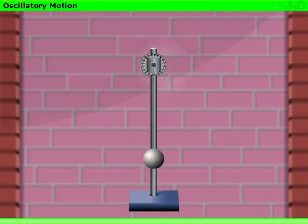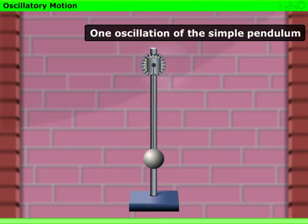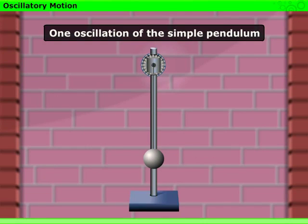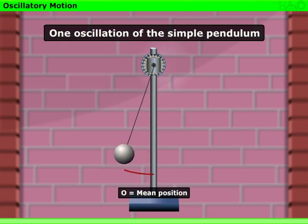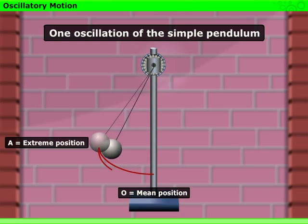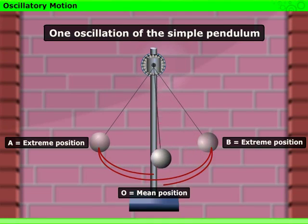A pendulum is said to have completed one oscillation when its bob, starting from mean position O, moves to one extreme position, say A, then to another extreme position, say B, and then comes back to O.